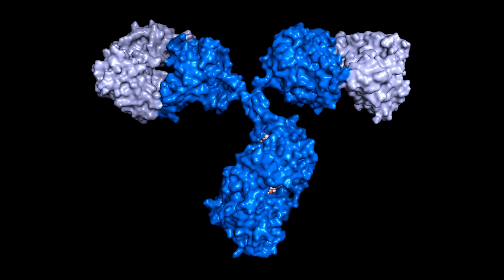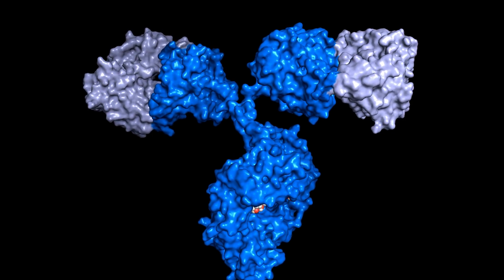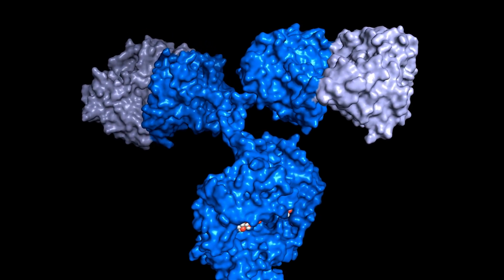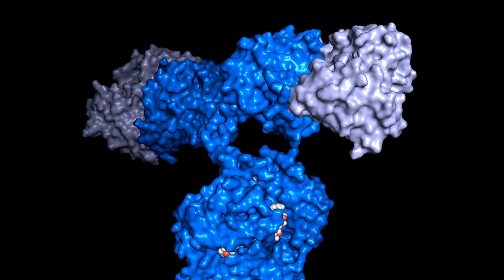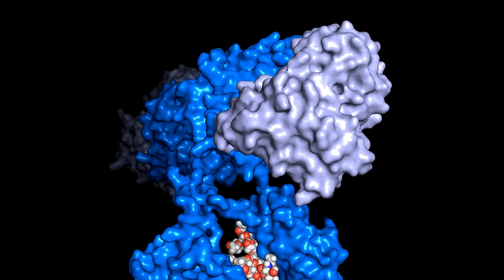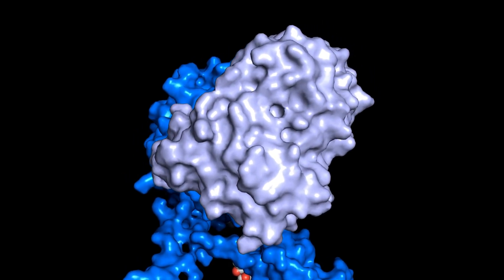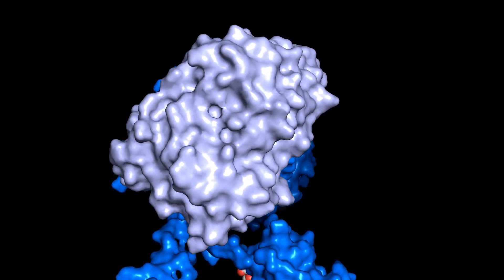You might be wondering how the body can recognize a foreign substance that it's never encountered before. Well, the amino acid sequence where the antibody binds the antigen, at the tips here, is variable. While the B cell is developing, the genes that code for the antigen binding region, which I've colored slightly lighter here, are shuffled up like a deck of cards.